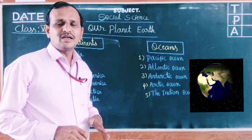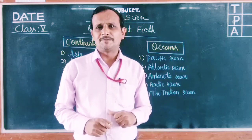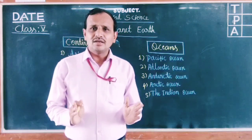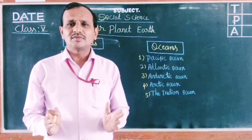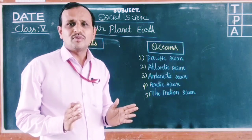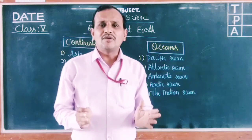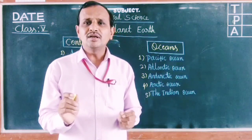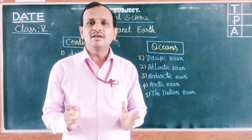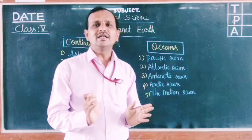In today's class we are going to discuss the next topic of this chapter. As we know, the surface of the Earth is covered by nearly 71% water bodies — the surface of the Earth is covered nearly 71% by oceans. The remaining area is land only.